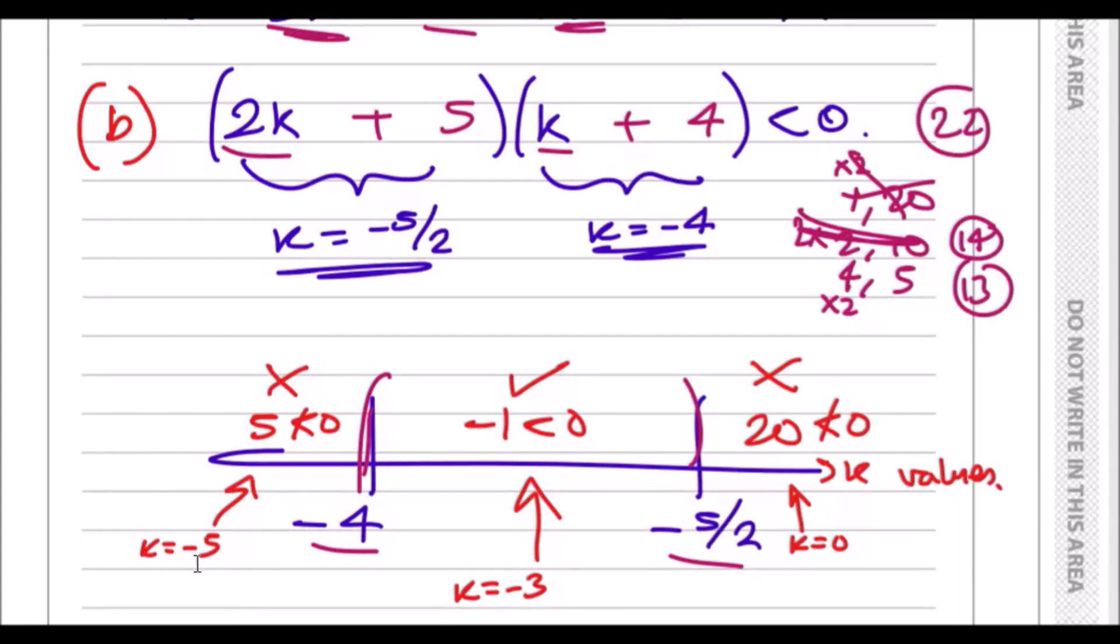For the left side, I chose a number for k which is less than -4. I chose -5. When I plugged in -5 into this first equation here, I realized I got 2 times -5 + 5, which is -5, and then -5 + 4 is -1. Multiplying this, I got +5, and you can see that 5 is not less than 0, so this statement is wrong. This means any value less than -4 is false, so k is definitely not less than -4. I did it for the right side. I put a value bigger than -5/2, so I chose 0. Plugging in 0 into this equation, you get 0 + 5 and 0 + 4, which is 20, and that's obviously not less than 0, so that's also false.